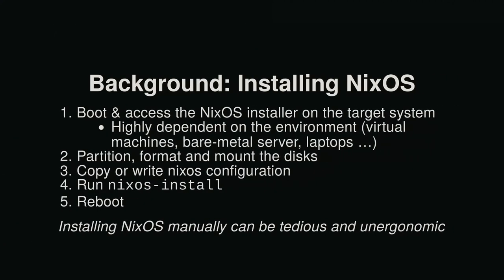To give you a little background on what steps are involved when you install NixOS: first you need to boot into a NixOS installer. This depends highly on your target — on a virtual machine you might have a VM image, on bare-metal servers something like PXE boot, or on a laptop you put in a USB stick. Then you need to partition the disks, add some file systems, and mount them to a location. Then you write some NixOS configuration or copy it from a previous system, run NixOS install, and then reboot. Five steps — takes a lot of time if you have to do it at scale.